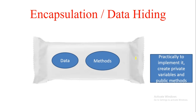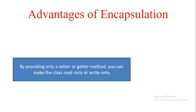The data is hidden because two different objects cannot interfere in each other's data and methods, since they are encapsulated in a logical entity called a class. The outside world also cannot access your data because it is private — accessible only through methods, only when you create an object of the class.